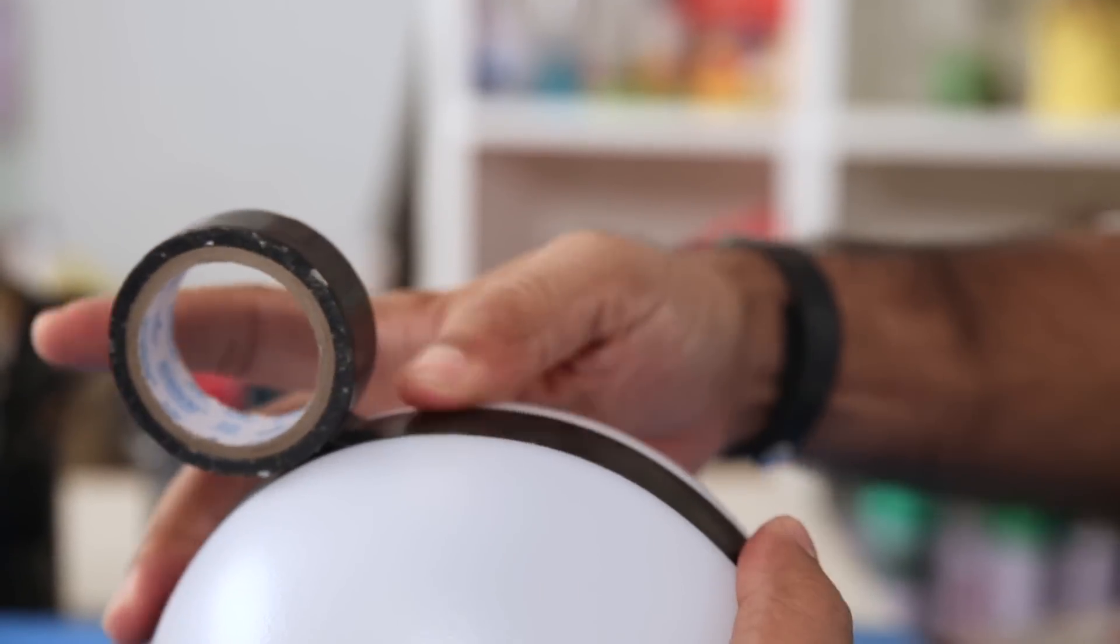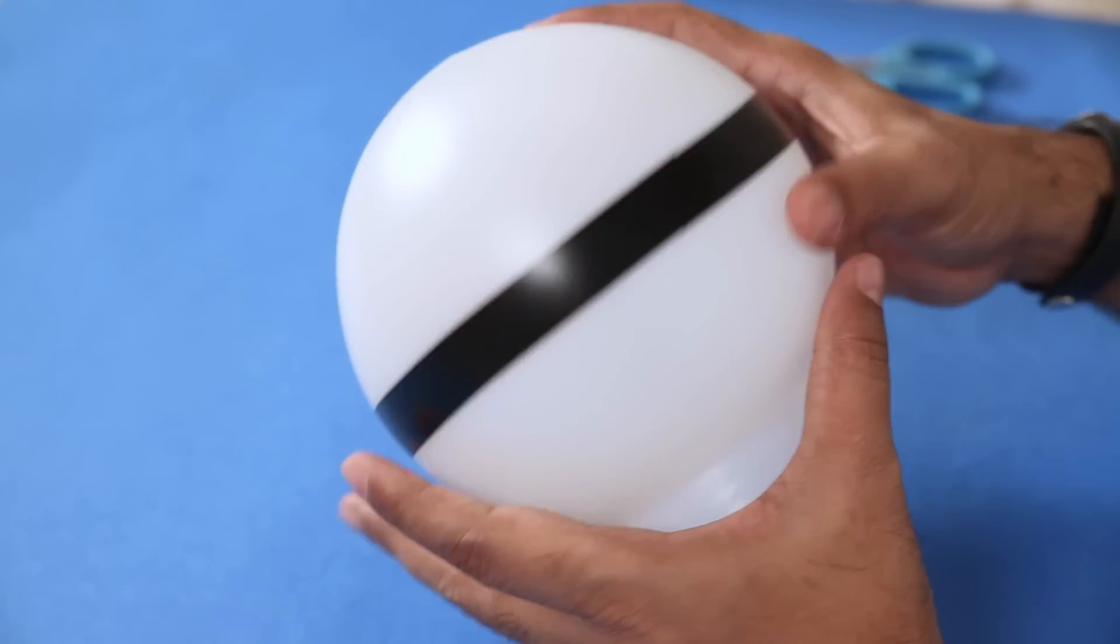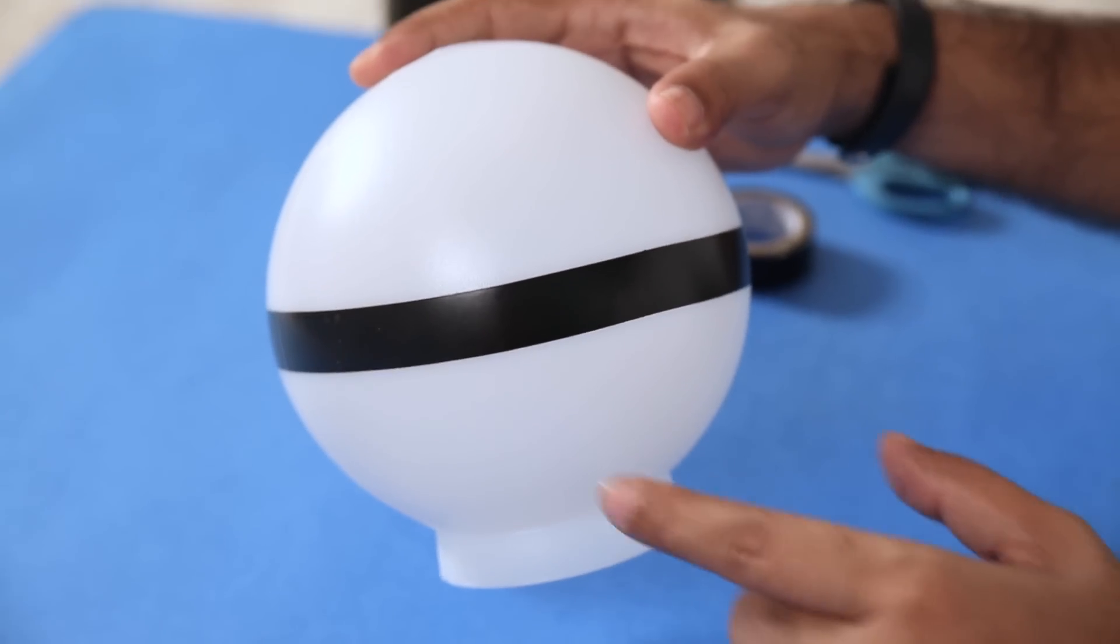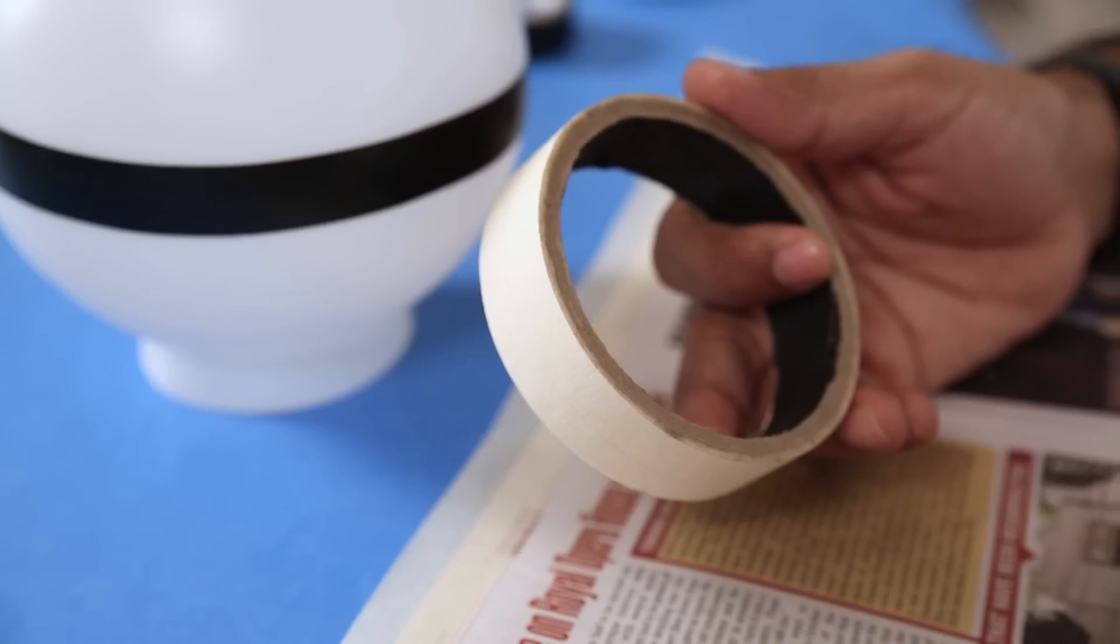And there you go, with that simple technique, we have a nice clean line right in the middle. Now for spray paints, I am going to mask the bottom portion. For that I'm using a newspaper and some masking tape.